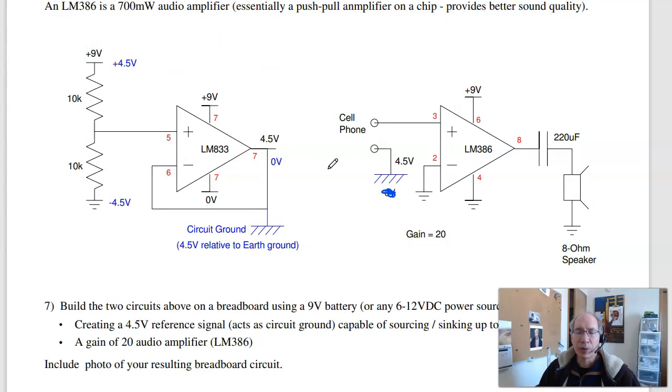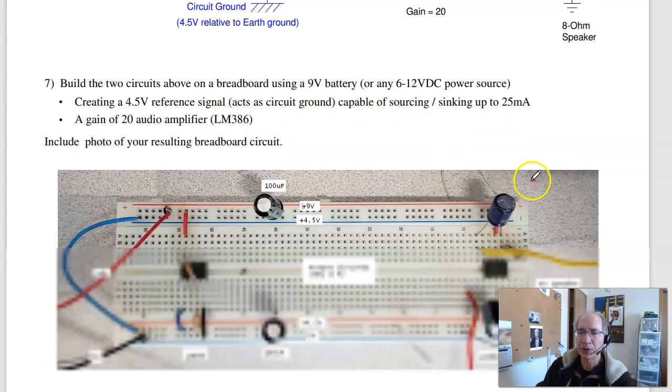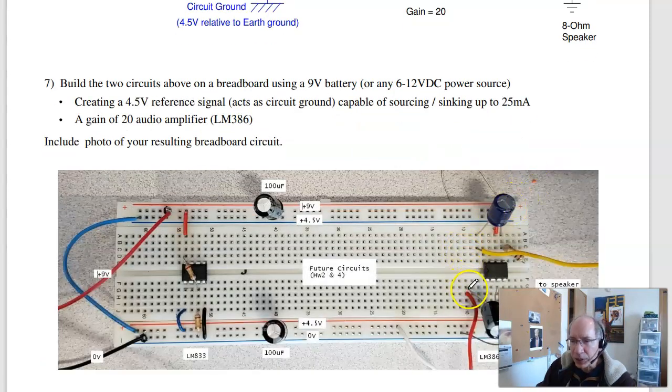For problem 7, we're using an LM386. This is similar to a push-pull amplifier, but it's on a chip. It's an op-amp with the amplifier on it, capable of 700 milliwatts. So this will actually drive the speaker at some decent volume. If you take your cell phone to here and drive the speaker, it actually sounds pretty clear. I built a couple circuits, kind of like so. So here's where the cell phone goes in.